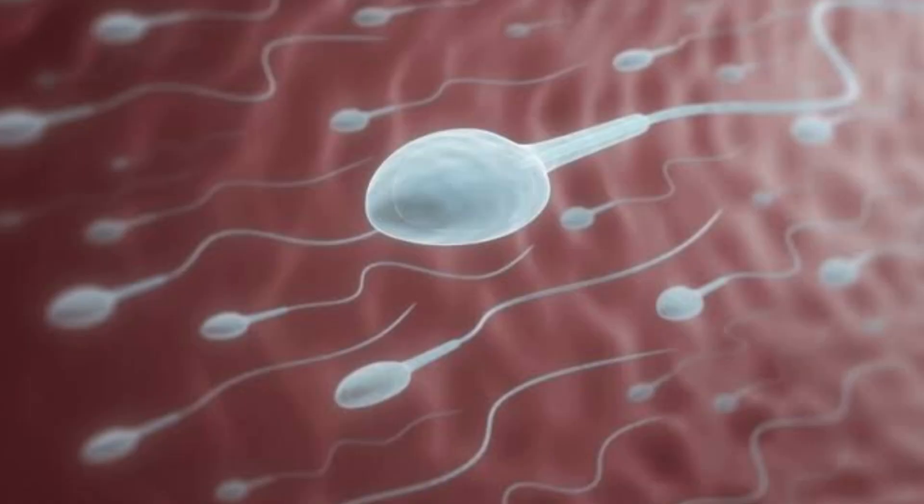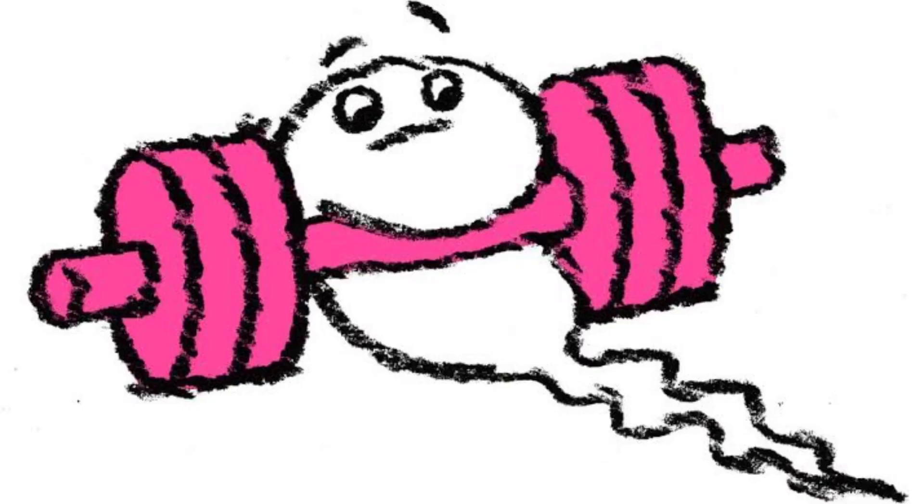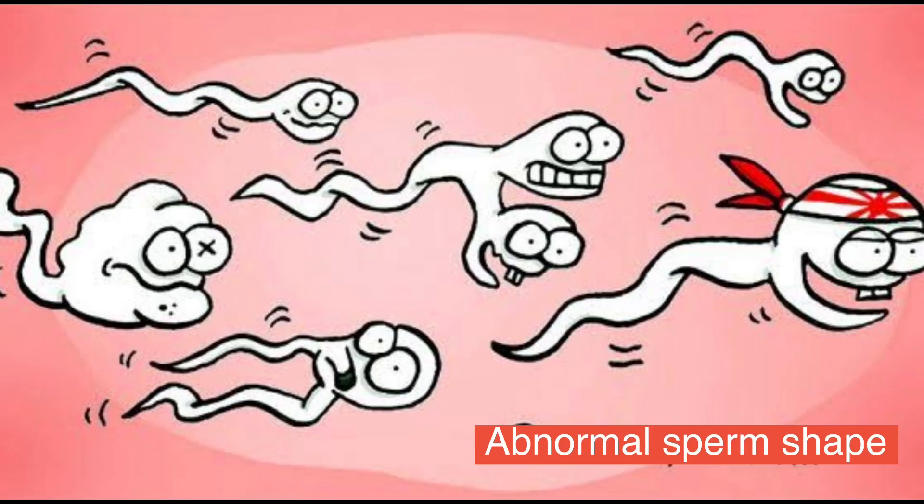In the vagina, some sperm that cannot continue the journey, either because they are too weak, slow swimmers, or have abnormal shape with either two heads or two tails, will flow out of the vagina. And that's where the journey ends for them.